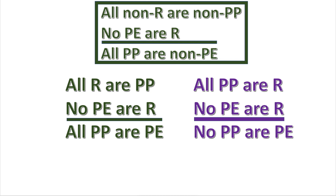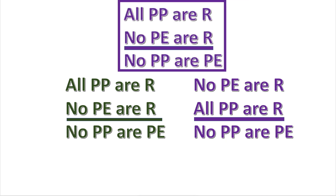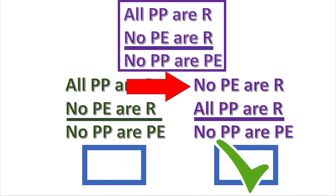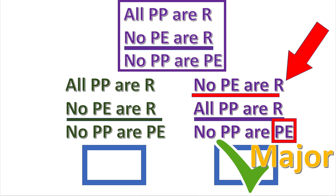Next, reduce the terms by eliminating the negations. This is the correct reduction. Next, choose the syllogism that is in standard form. The premise containing the predicate of the conclusion is the major premise and it goes first.